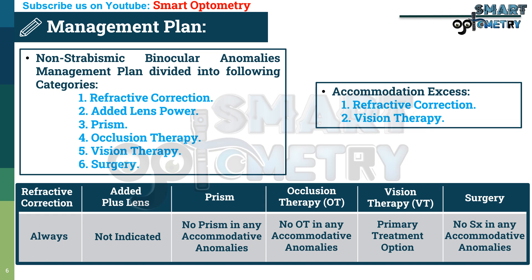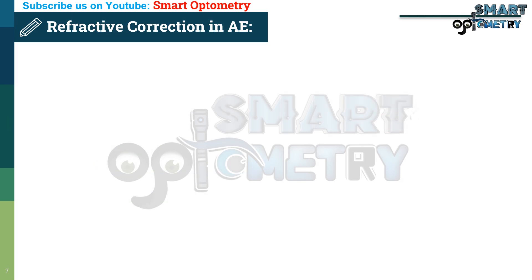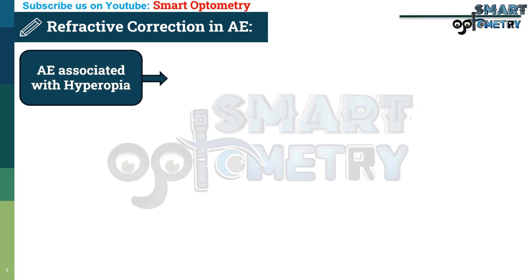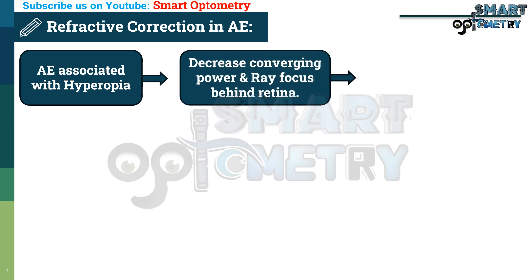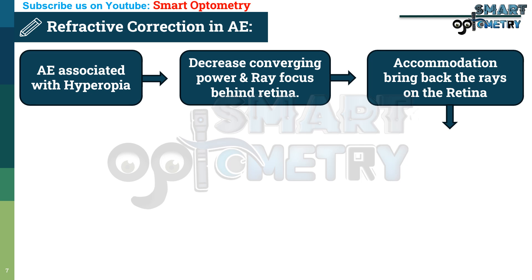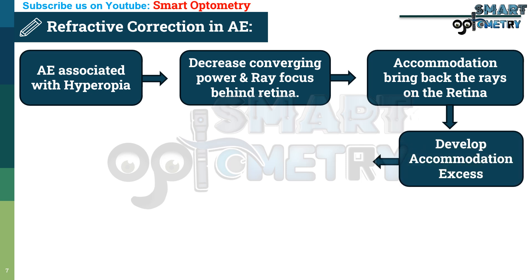Now let's see how to give refractive correction in accommodation excess patients. Accommodation excess is mostly associated with hyperopia. In hyperopia, the total converging power of the eyes is decreased and rays coming from infinity focus behind the retina. When rays focus behind the retina, accommodation gets stimulated and brings the rays back onto the retina. But as accommodation has to work more than required to bring the rays onto the retina, it ultimately ends up with accommodative excess.